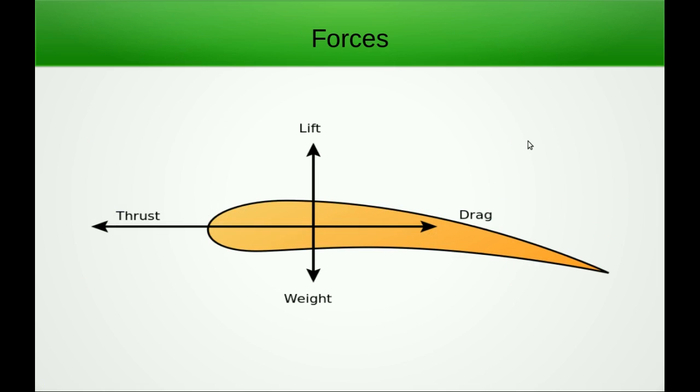Now if you see this, this is called airfoil. Actually this is a cross section area of the wing to simplify the forces on a plane. Here thrust is produced because of the engine in the forward direction to overcome the drag, which is because of the shape of the aircraft. And lift is being produced to overcome the weight. So this is as far as the airfoil forces are concerned.